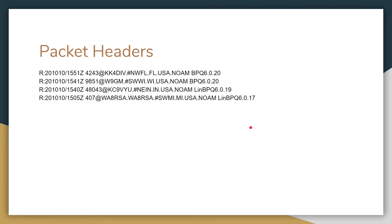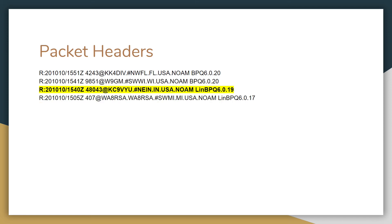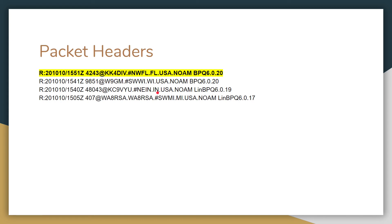Packet headers: I put this in this presentation just to give you an example, because some people don't know how to read the headers. This message was originated in Michigan, WA8RSA. It got forwarded to Indiana, and he forwarded it to Wisconsin, and then to Florida — and there's my buddy KK4DIV. So that's how these packet headers work.